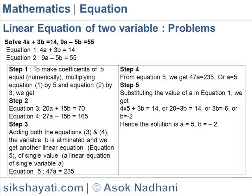Step one: to make the coefficient of b numerically equal, multiply equation one by five and equation two by three. In step two, we get equation three: 20a plus 15b equals 70, obtained by multiplying equation one by five. Equation four: 27a minus 15b equals 165, obtained by multiplying equation two by three.